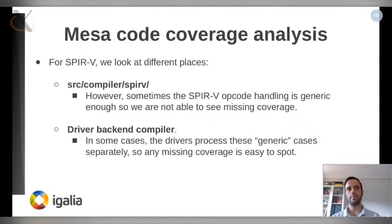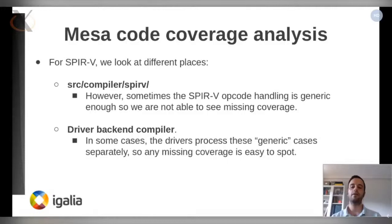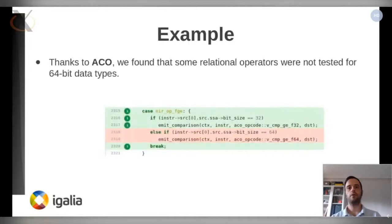As one driver can split some SPIRV opcodes but not others, and the other way around for other drivers, this is the reason that we are running the tests on different drivers. Currently we are only focused on RADV and Anvil, because they are very mature and very feature-complete. One example of this work: thanks to ACO, we found that some relational operators were not tested on 64-bit data types. Thanks to this analysis, it was easy to add them in CTS.